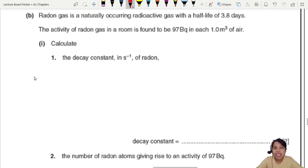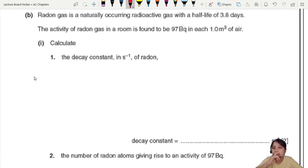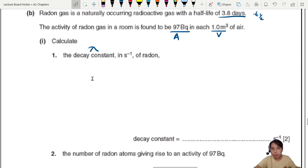Next part. Radon gas. It's a naturally occurring radioactive gas with a half-life of 3.8 days. So that's our T half over there. T half is how long it takes for half of the nuclei to decay or for the activity to drop to half. Activity is found to be 97 Becquerel in 1 meter cube of air. Calculate the decay constant, lambda, in seconds of radon. So if we have T half, we have lambda, we can use that equation. In the first page of every paper, you will see them write this down.